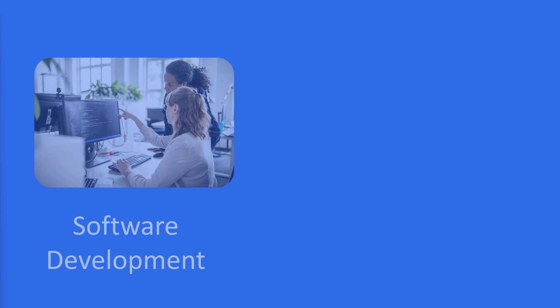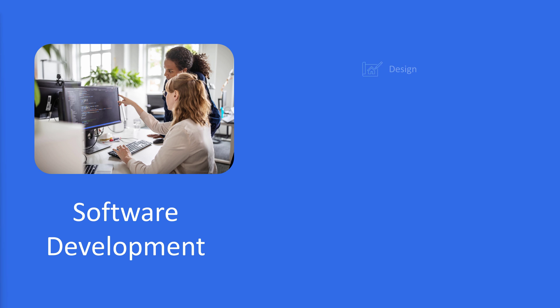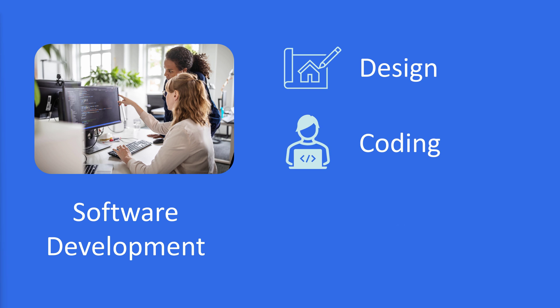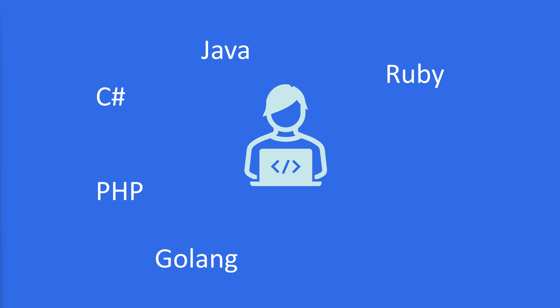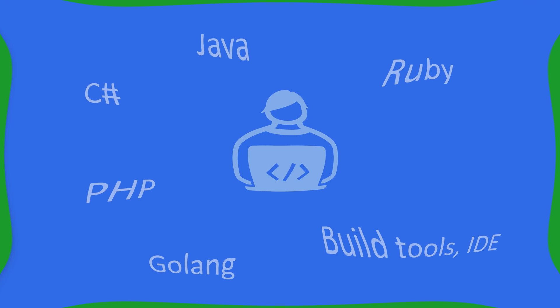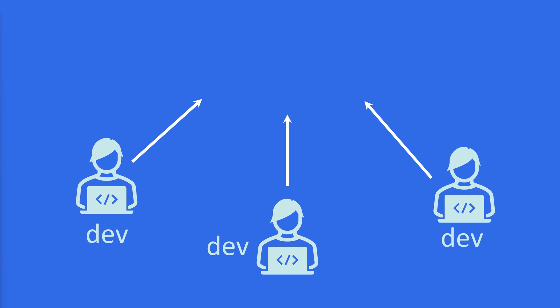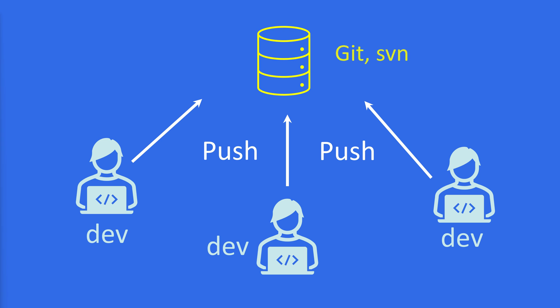Software development refers to a set of computer science activities dedicated to designing, coding, and testing software applications. The developer or development team starts writing the application using different programming languages like Java, C#, PHP, Golang, Python, etc. The application code is stored in a repository like Git, SVN, etc.